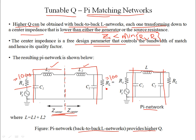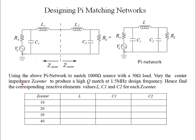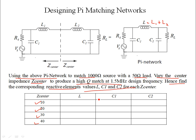The center impedance must be selected below the minimum of both source and load resistances. Now let's consider a design problem: use a pi network to match a 1000Ω source to a 50Ω load, varying Z_center to produce a high-Q match at a design frequency of 1.5 MHz. Then find the corresponding reactive elements — L1, L2, C1, C2 — where the series inductance L is the combination of L1 and L2.